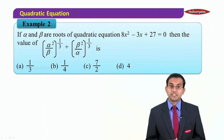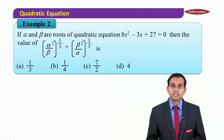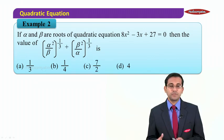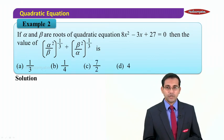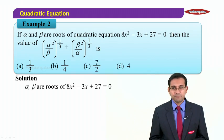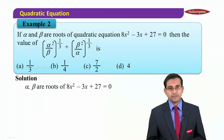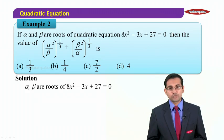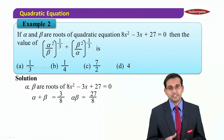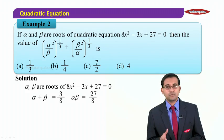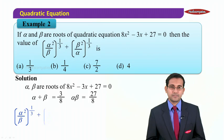It is a multiple-choice question, so we determine which option the value matches among the four options. Since alpha and beta are roots of 8x² − 3x + 27, we have α+β = 3/8 and αβ = 27/8.